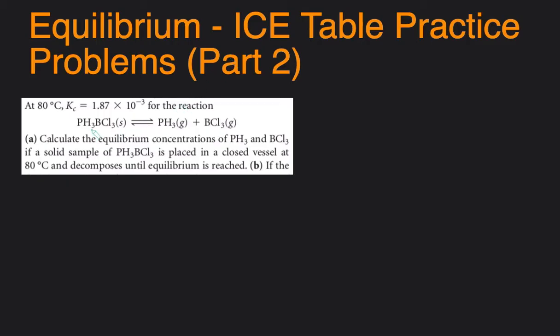At the start of this question, we are given a reaction, this time containing a solid and then two gases. We're also given the Kc value and we're asked to calculate the equilibrium concentration of the products if we're starting with some sample of the reactants. So let's start by just rewriting the reaction: PH3BCl solid becoming PH3 gas and BCl3 gas.